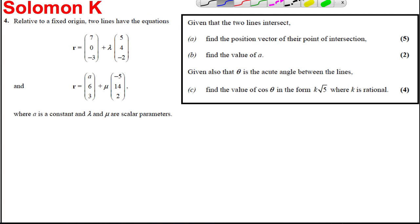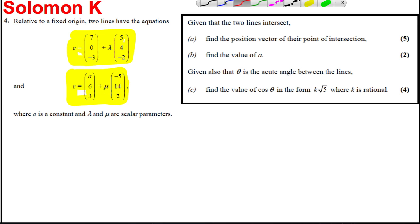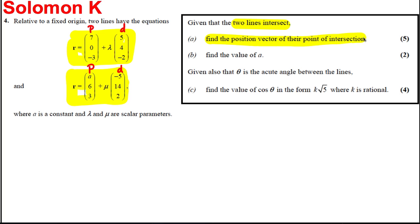We have a vector equation question with two vector equations. For each line, we identify a point on the line and the direction of the line. The constant 'a' is an unknown x-coordinate of a point. We're told the lines intersect, so we can set them equal. We need to find the point of intersection, the value of 'a', and given that θ is the angle between the lines, find cos θ in the form K√5 where K is rational.